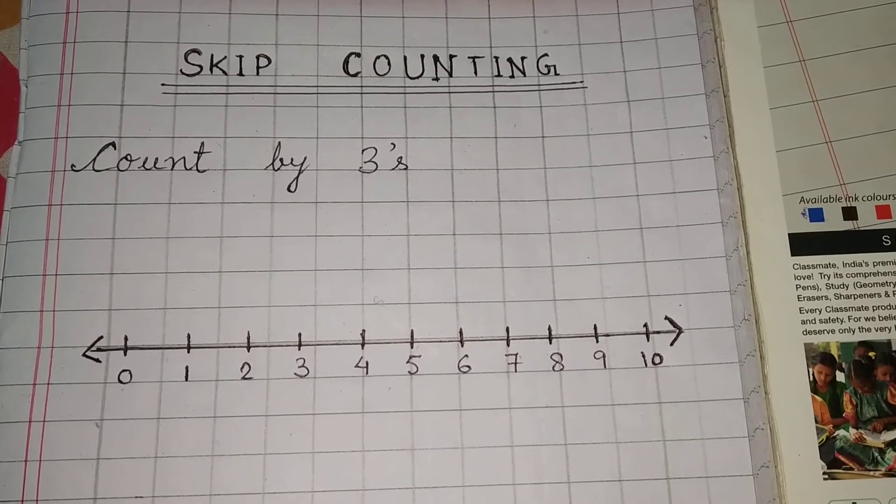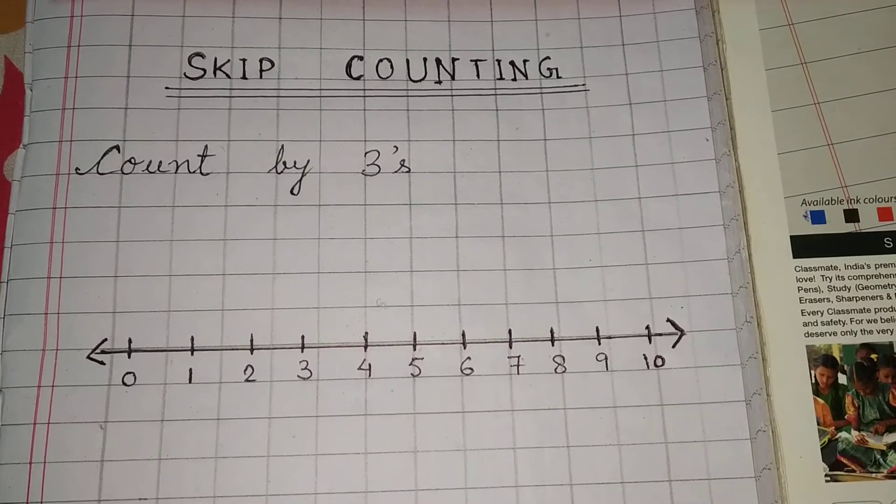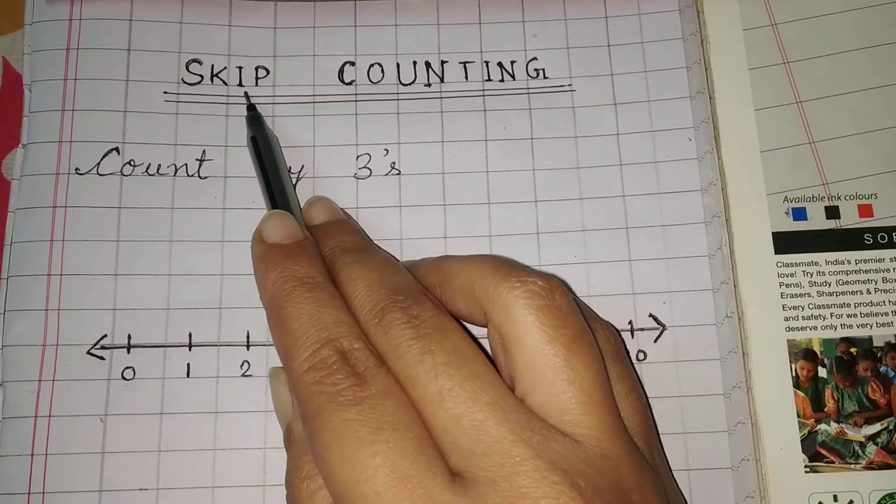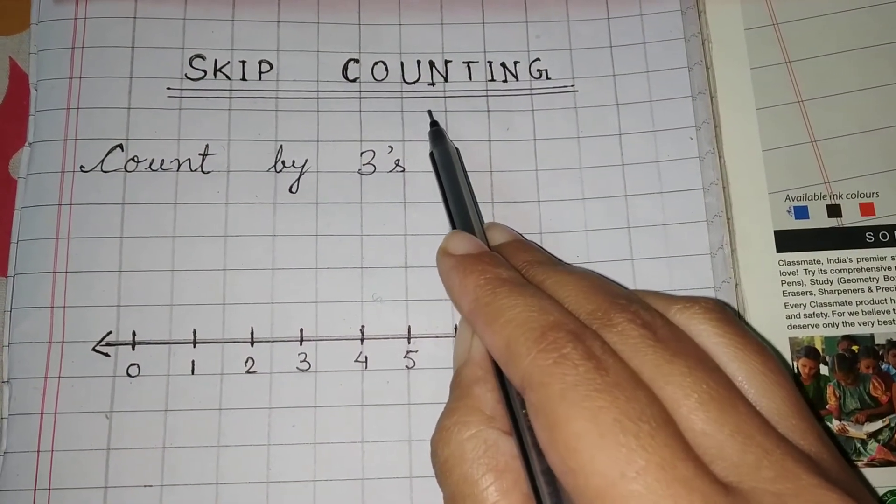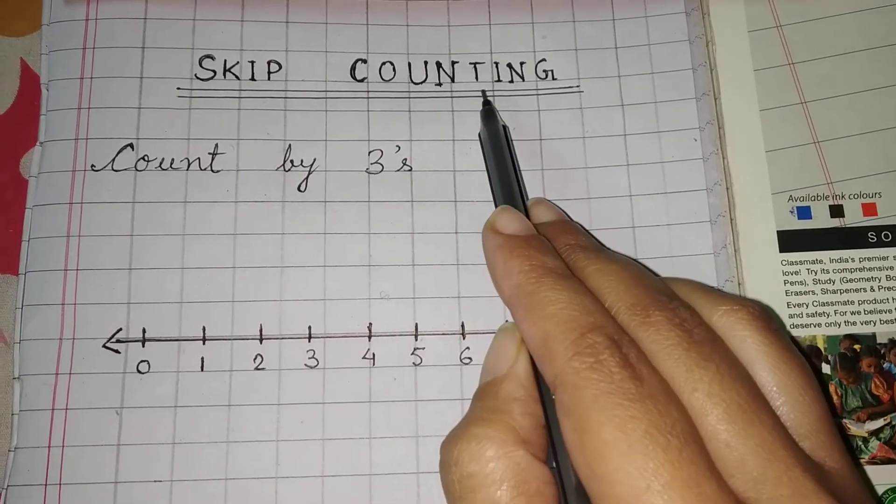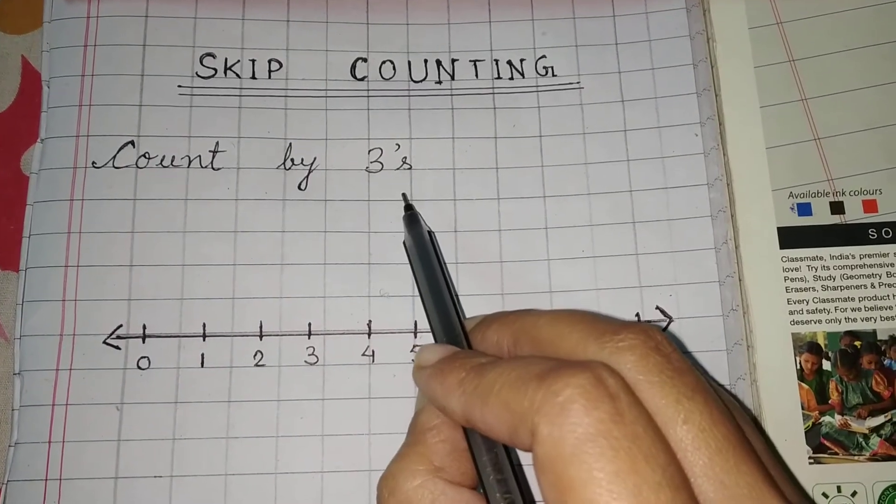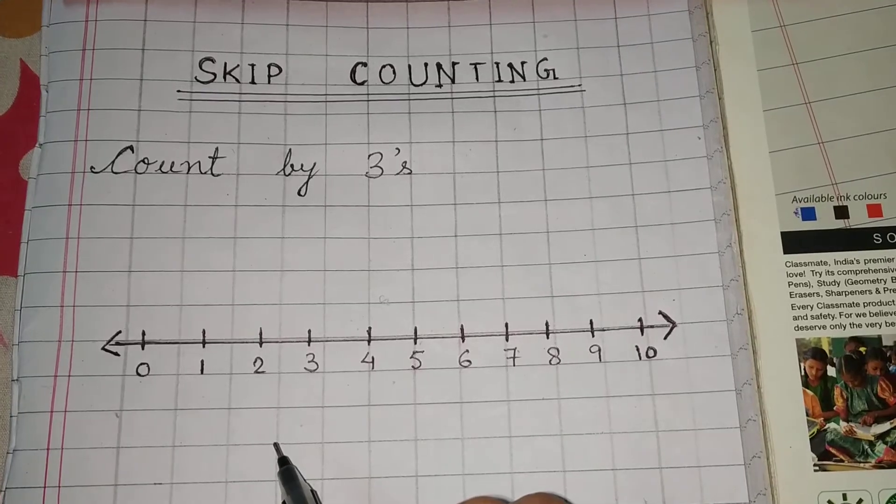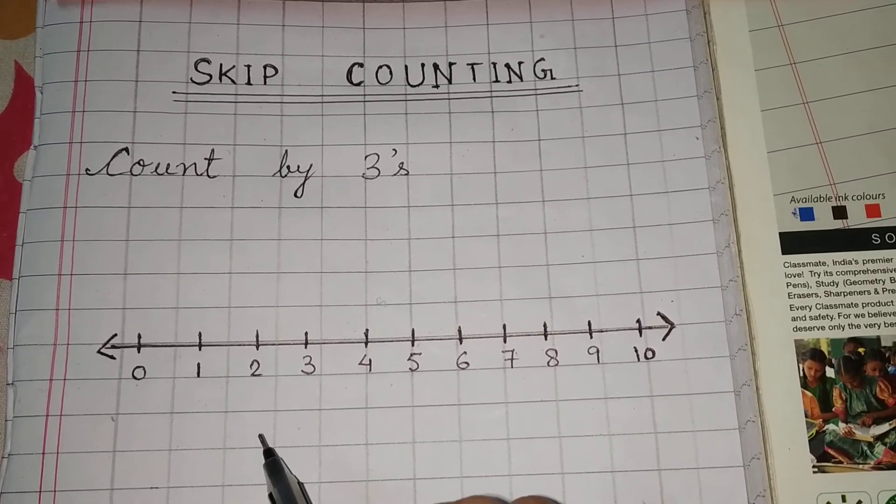So as you can see here, it is written skip counting, count by threes. Now in today's class we will be doing skip counting by three. That means we have to jump from zero to three.